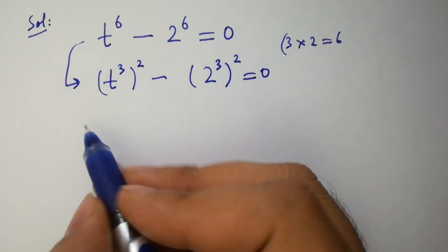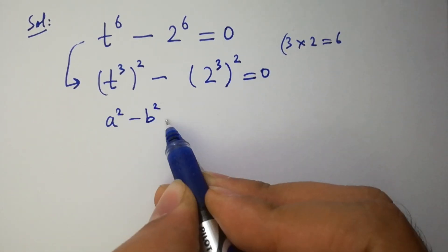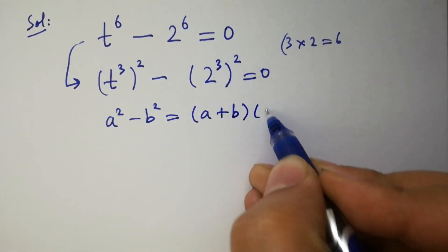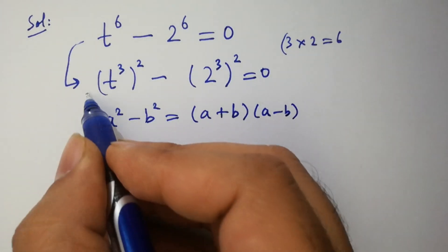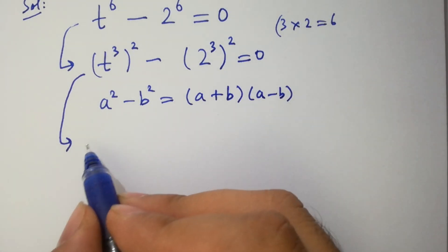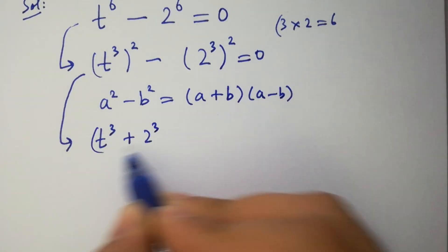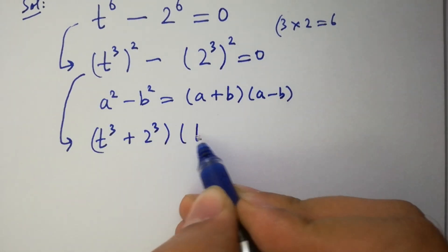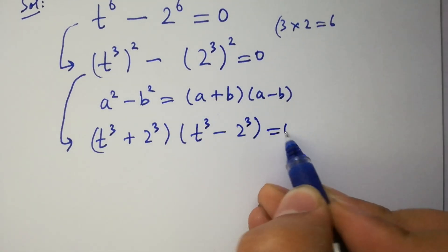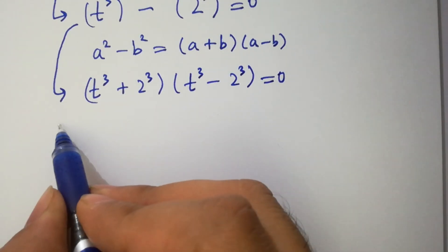As we know, a squared minus b squared equals (a plus b)(a minus b). Then we have (t cubed plus 2 cubed)(t cubed minus 2 cubed) equals 0. We have two cases here. Case 1: